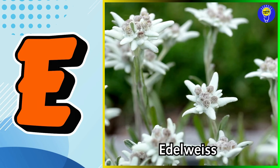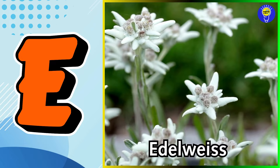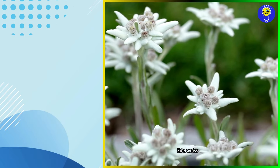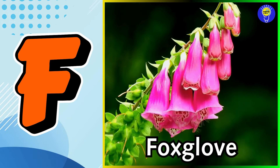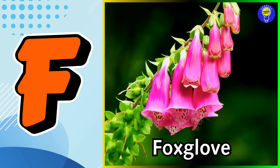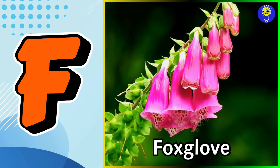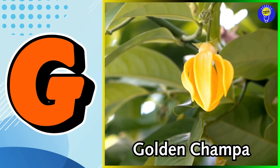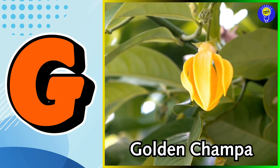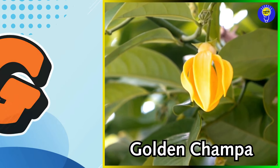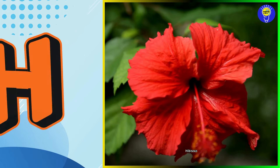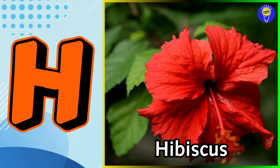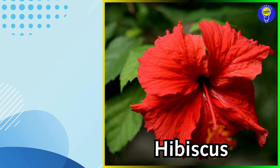E is for edelweiss flower. F is for foxglove flower. G is for golden compa flower. H is for hibiscus flower.